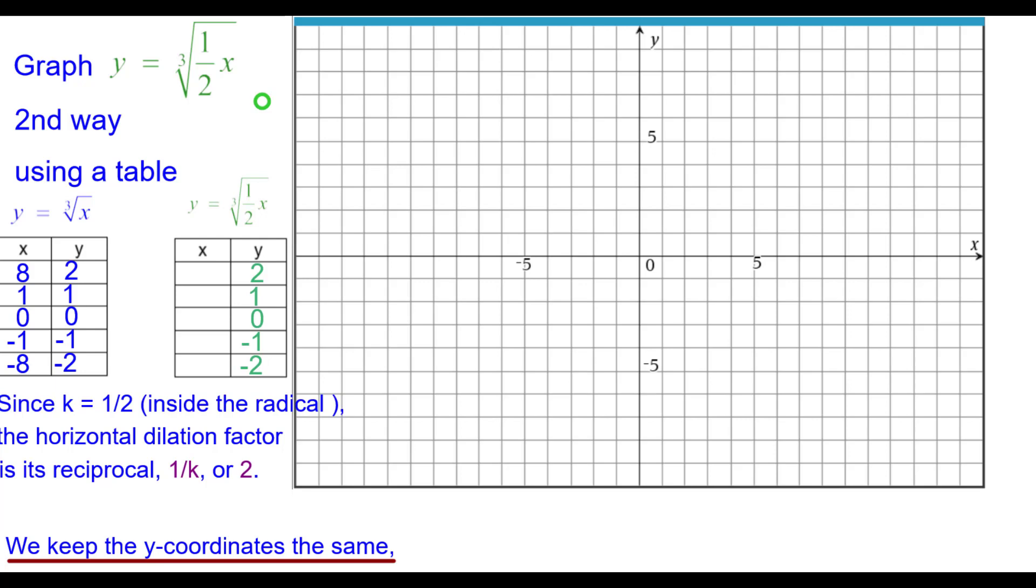We keep the y coordinates the same. And we multiply each x coordinate by the reciprocal of k which in this case is two. So eight times two is sixteen.